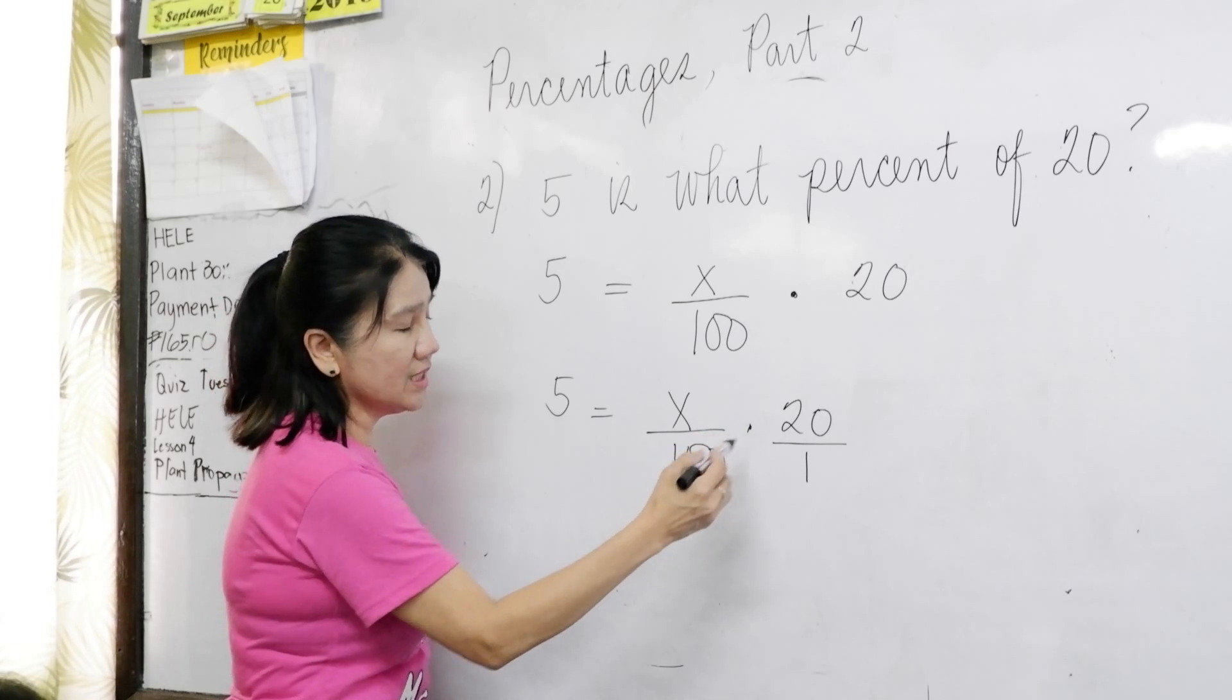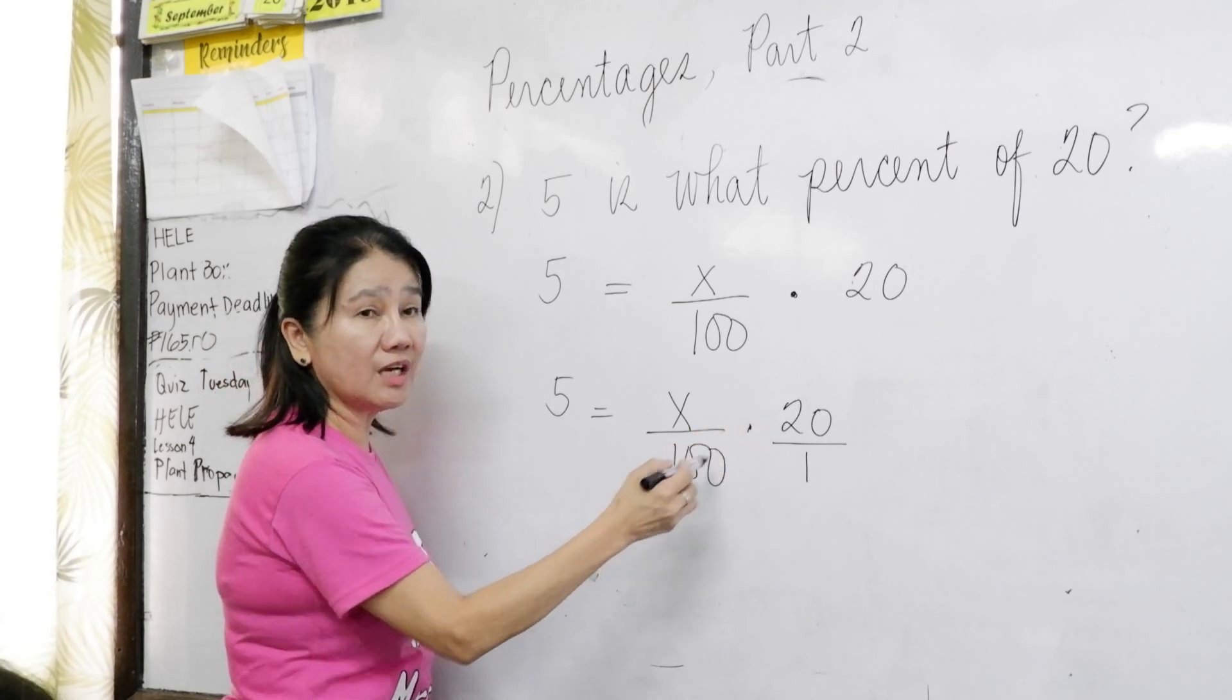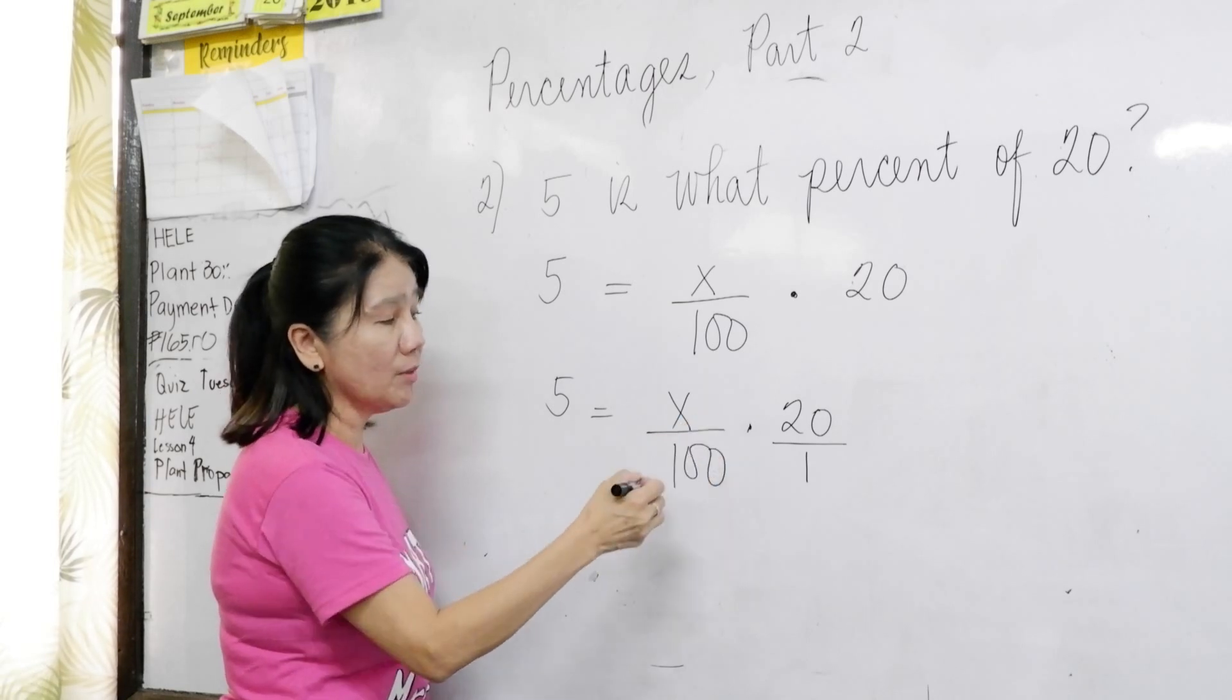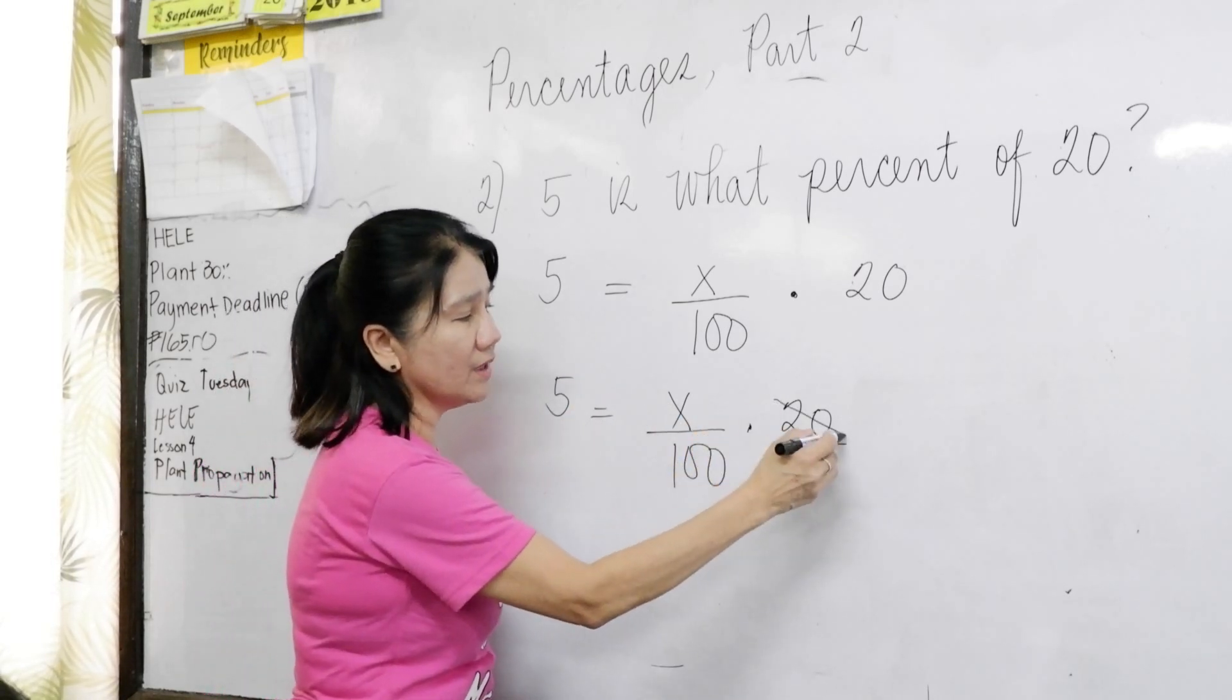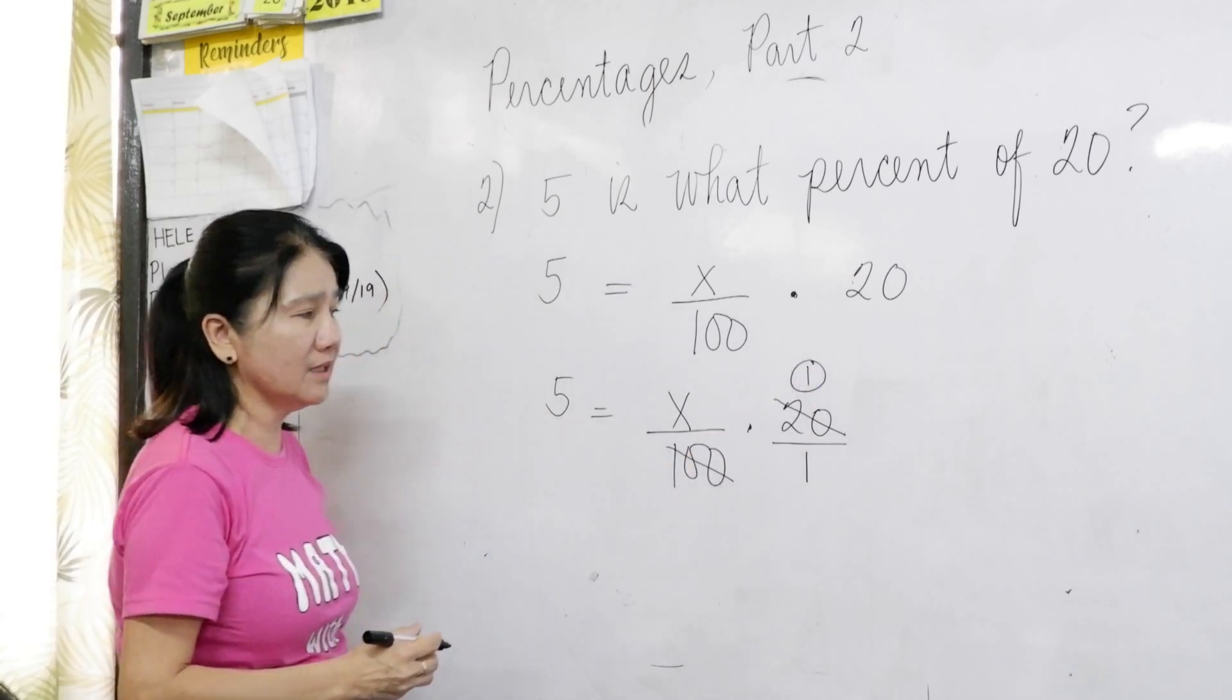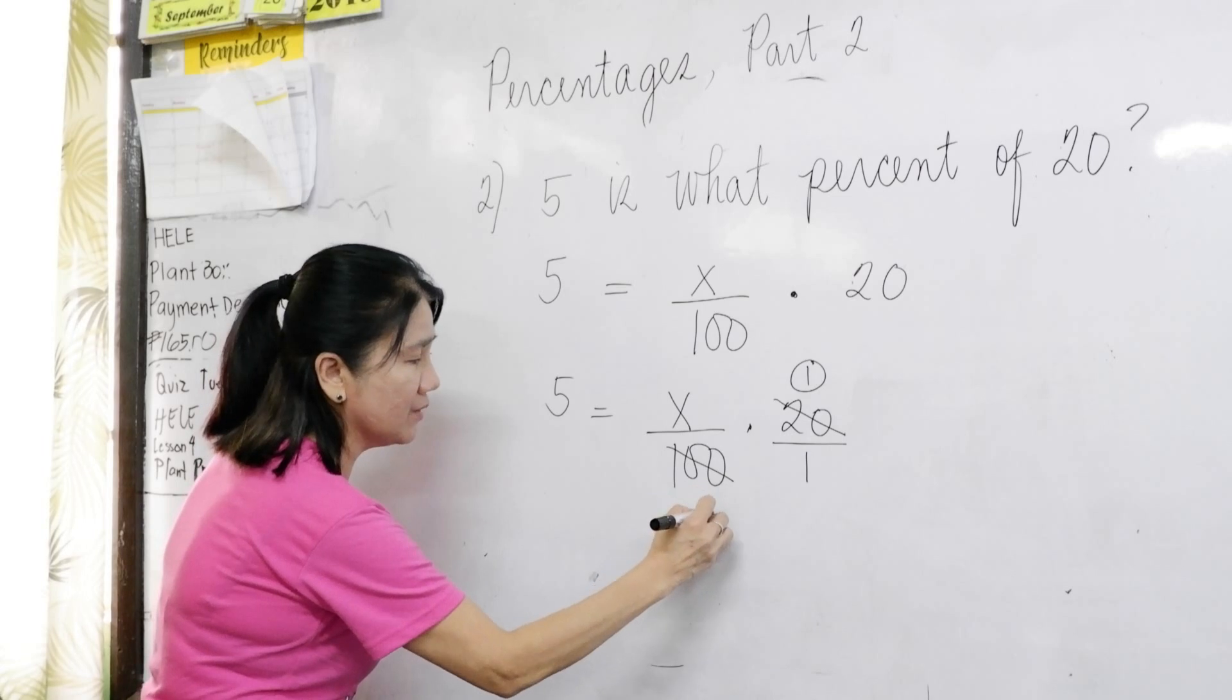So, we know that twenty is twenty over one. You always have to remember that. Now, we see that twenty and one hundred are cancelable. The greatest common factor is twenty. So, twenty divided by twenty is one. One hundred divided by twenty is five. Correct.